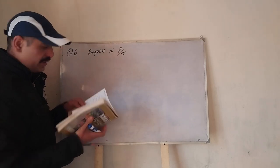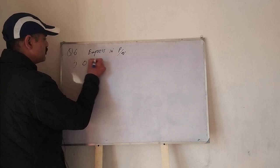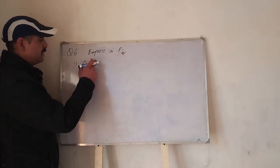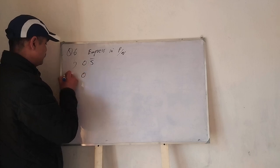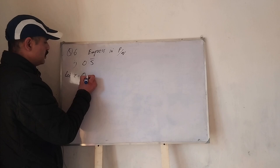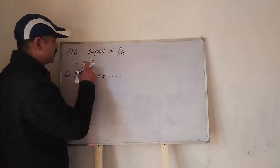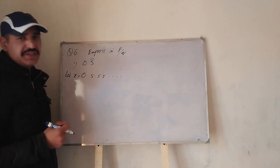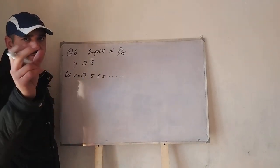First recurring decimal is 0.5 bar. Now, this bar ka matlab yeh hai ke yeh repeat ho raha hai. Let x is equal to 0.555 and so on, because this number is repeating itself. Is ko hum kahenge recurring decimal. Recurring means repeating.